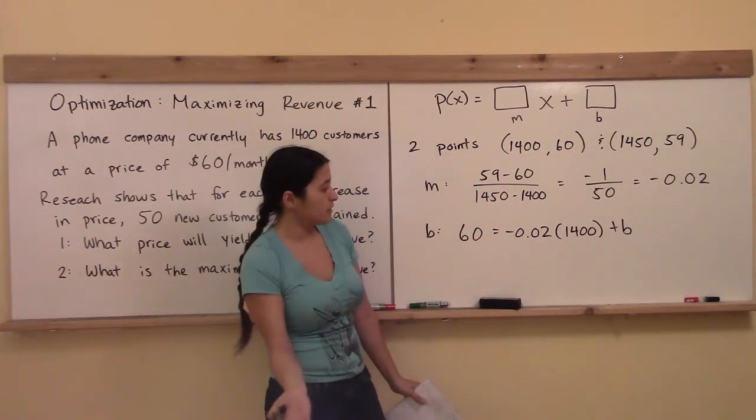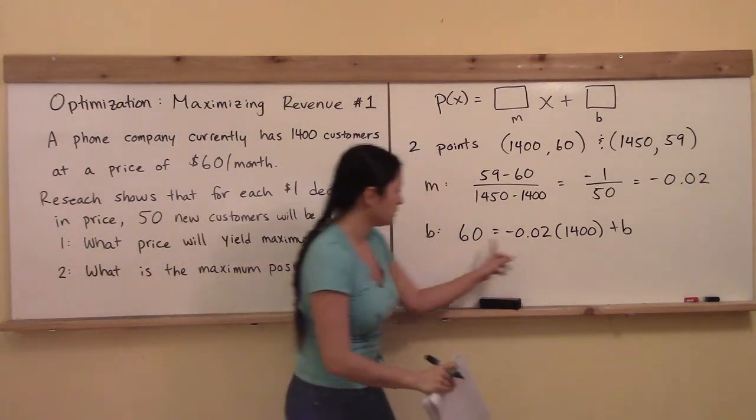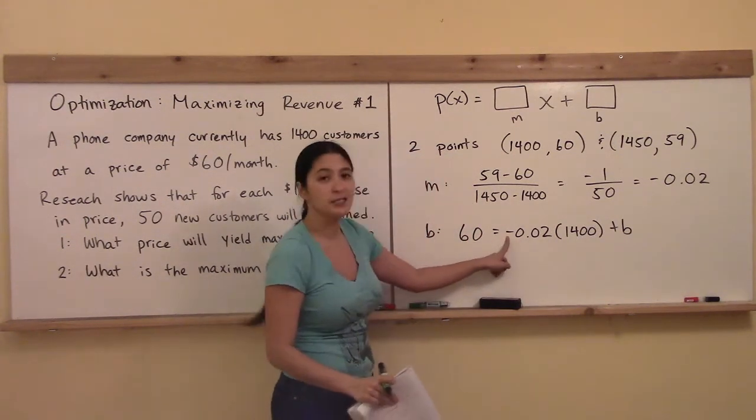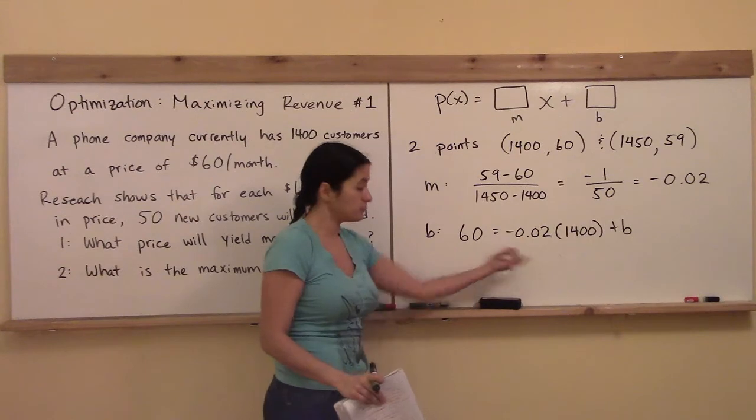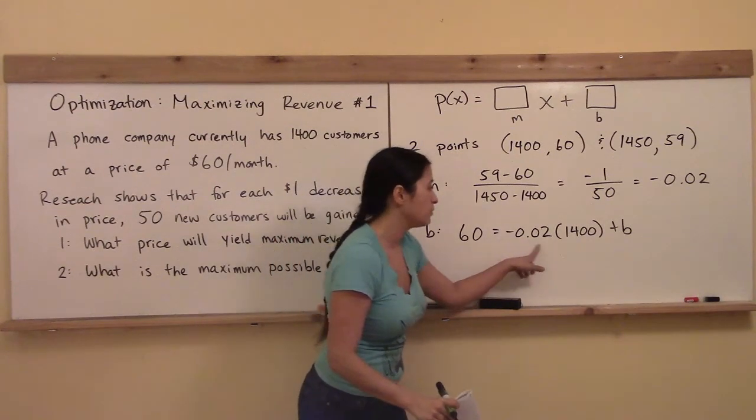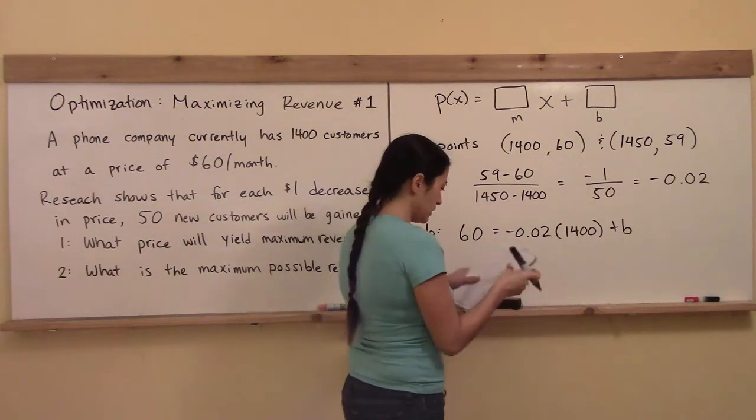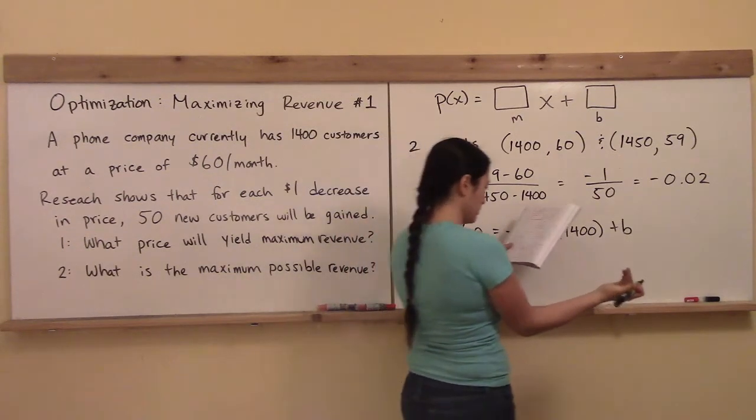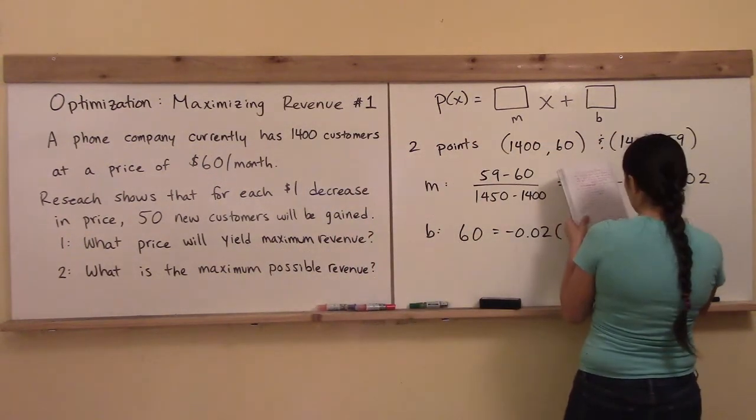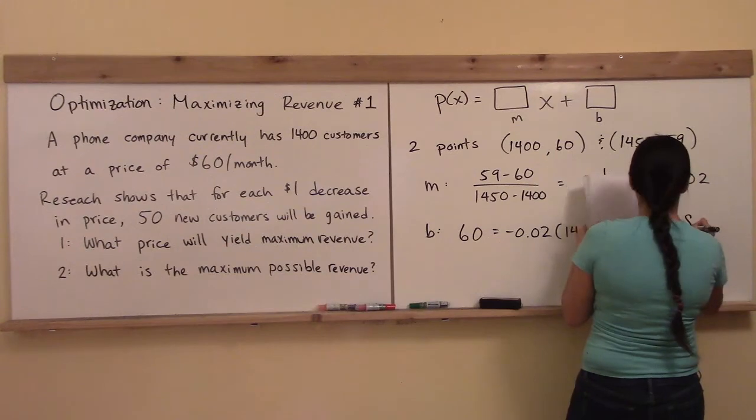And then the last unknown is the plus b. So you can see from this that here b is going to be equal to 60 plus because I'm going to move it to the other side so the minus becomes a plus. So plus whatever 0.02 times 1,400 is.